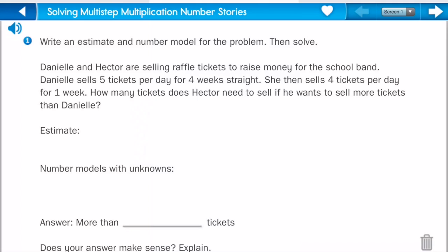I know that Danielle sells five tickets per day for four weeks straight. So she sells five tickets, and I have to think about how many days are in a week — seven. So then I take those and multiply whatever this number is times four, because she's been selling them for four weeks straight, and that's going to equal X.